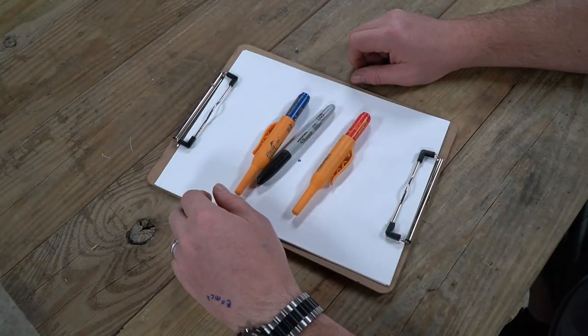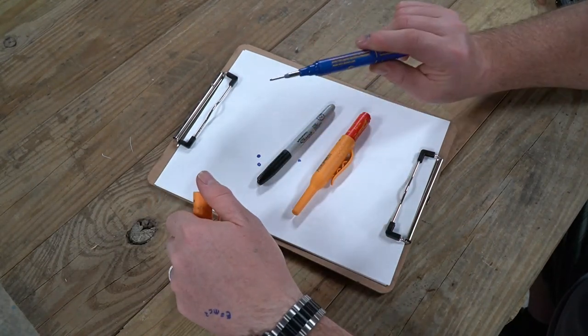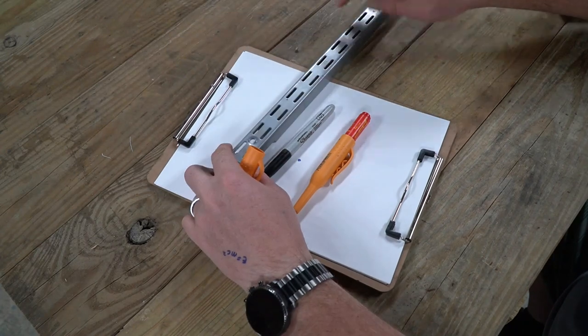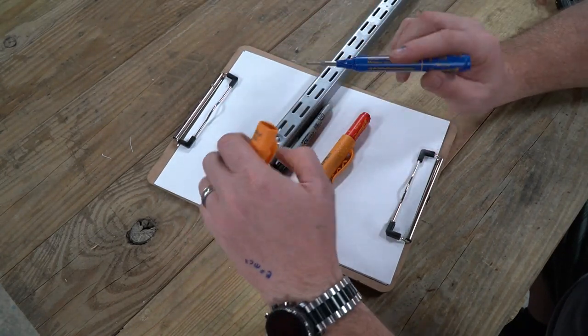Pica also makes a really good permanent marker. The one thing I really like about them is the fact that the tips are also small, just like their pencils, so you can get them in areas that you just can't get a sharpie. The other thing I like is the tips hold up really well.